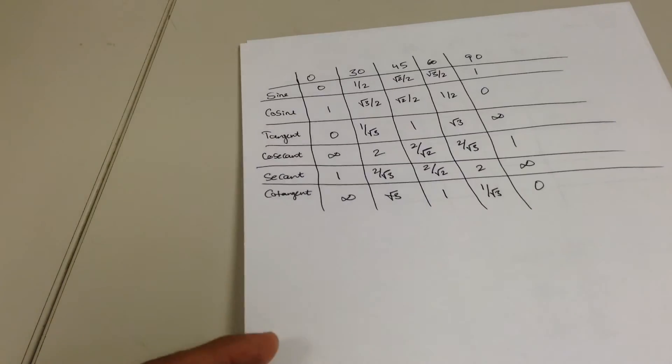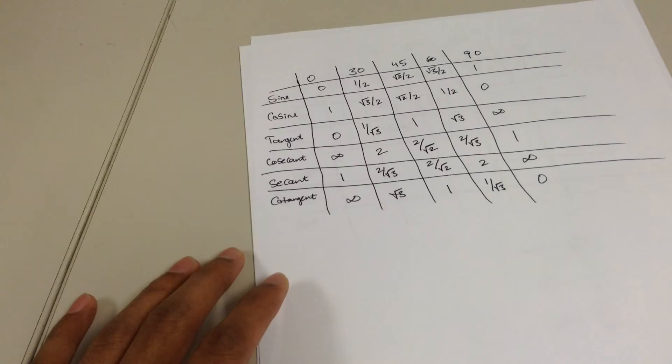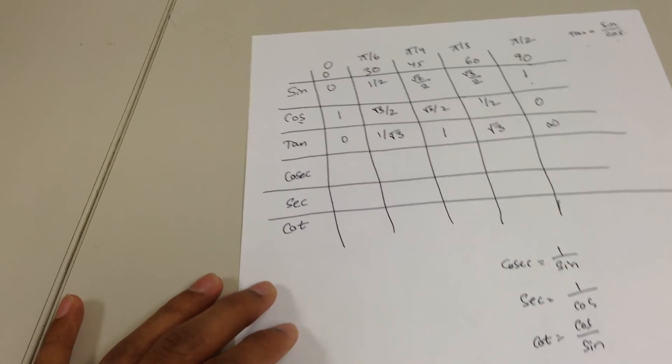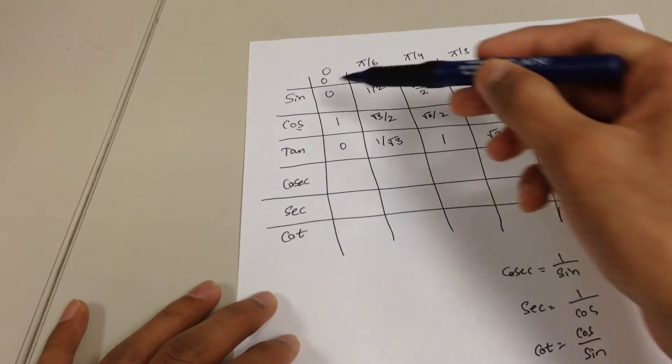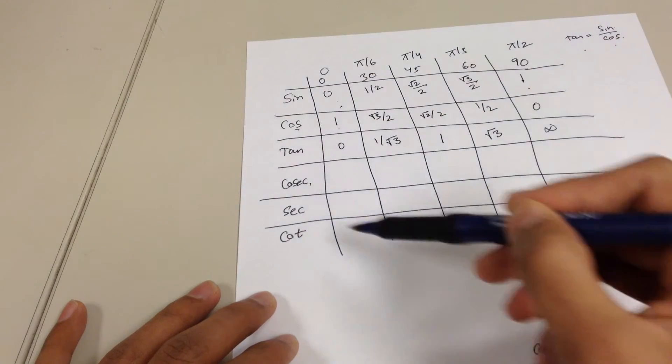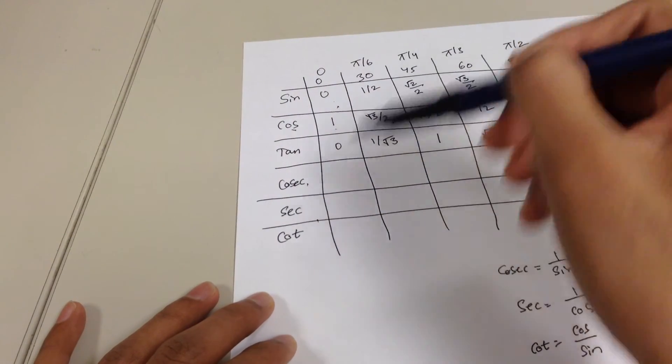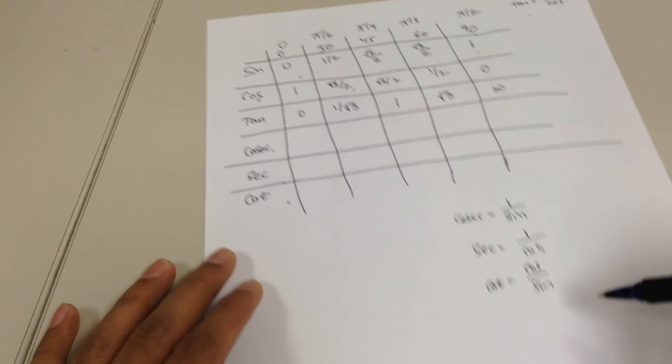And here are the values that I did earlier, and you should be getting these values when you do the math. So again, for review, you just have to memorize the sine row. For cosine, just reverse the sine row. For tangent, just divide sine by cosine. For cosecant, just do one over sine. For secant, just do one over cosine. And cotangent, either do one over tangent, which is the same thing as cosine over sine.